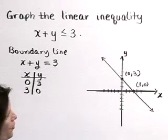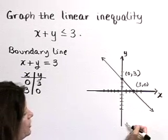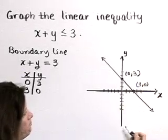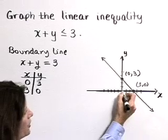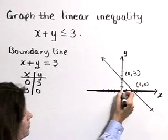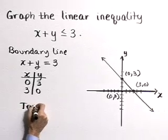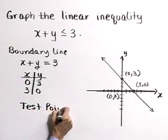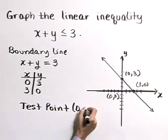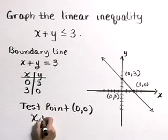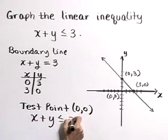Next, let's determine the region to shade either below or above the line. How about we use the origin as a test point, the point 0,0, and determine if that point satisfies our inequality, X plus Y is less than or equal to 3.